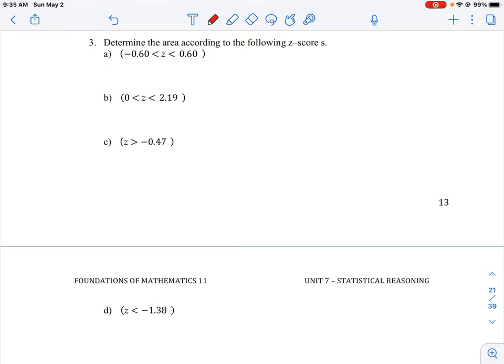Okay, let's take a look at how to do question number three here. The question is asking you to find the area according to the following z-scores. What that should trigger in your memory is that we are looking for the area or probability under the standard normal curve for distribution of data.